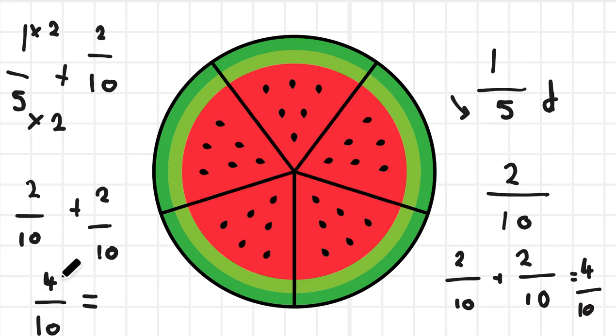I always try and half first because it makes things easy. How many times does two go into ten? That's five. And how many times does two go into four? That's two. So that means that two fifths of my watermelon must be prepared for the party.